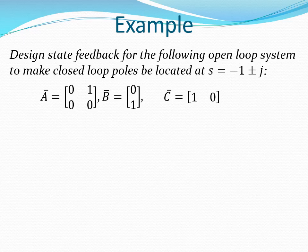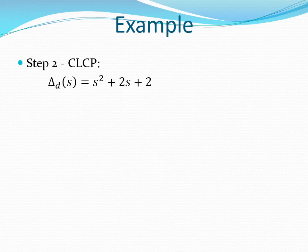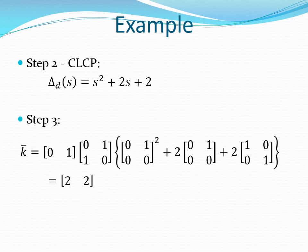Let's illustrate using an example. We are given matrices A, B, and C as well as the required pole positions and need to design a state feedback controller. The first step is to obtain the controllability test matrix, which works out as shown on the slide. The second step is to obtain the closed loop characteristic polynomial, which works out as delta(s) = S² + 2S + 2. The third step is to work out the gains in the matrix K using the Ackermann's formula. Matrix K is a 1 by 2 matrix because there are two states and B is a 2 by 1 matrix. K works out as [2, 2].